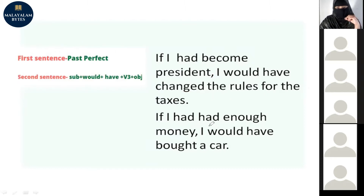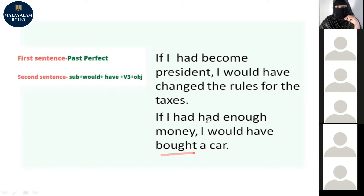This sentence uses 'had had' — the past perfect form: 'had had' plus subject, 'would have', then the V3 form of the verb. Here we have a sentence structure with the 'would' modal — it's easy once you know it.